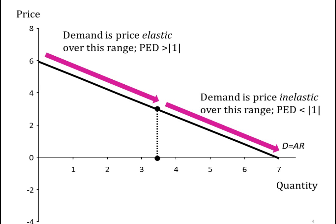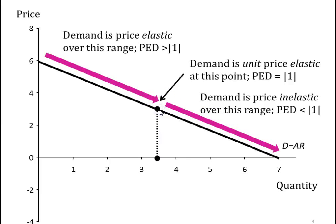What about the point in between? We've gone from price elastic — where the price elasticity of demand coefficient is greater than 1 in absolute terms — to price inelastic, where the coefficient is less than 1. We must have passed through the value of 1. So at the midpoint on a straight-line demand curve, the price elasticity of demand coefficient must equal 1 — demand is unit price elastic at that point.